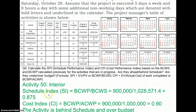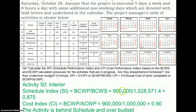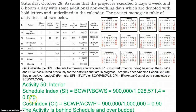For the other activity in progress — interior works — the schedule index is calculated by dividing £900,000 (the budgeted cost of work performed) by the budgeted cost of work scheduled. Both the schedule index and cost index values are less than one, at 0.875, indicating that this activity is behind schedule and over budget.